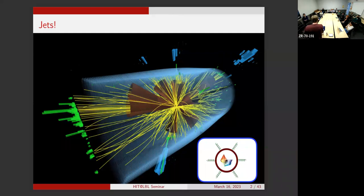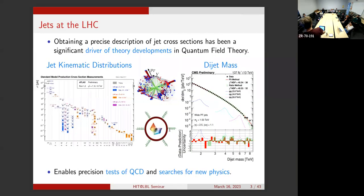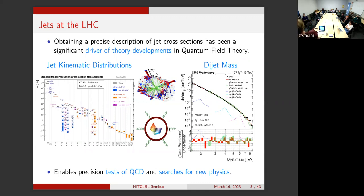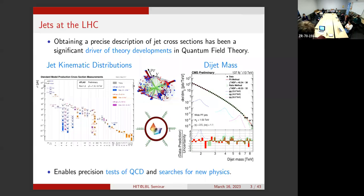This simplest approach already drove a huge amount of progress in quantum field theory. The desire to understand these complicated collisions motivated many nice developments in QFT, and on the phenomenological side it enables very precise tests of QCD—measuring cross sections with many jets, probing the underlying matrix elements, and searching for new physics beyond the standard model.